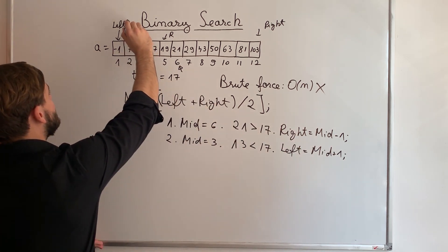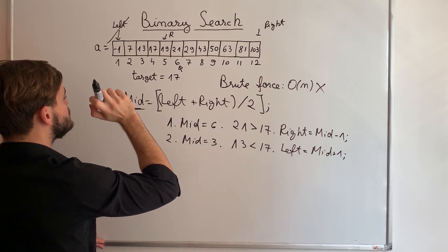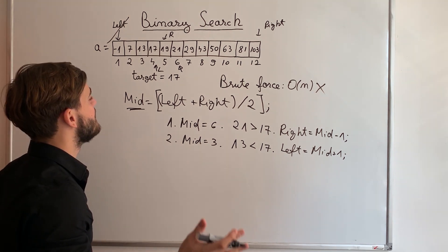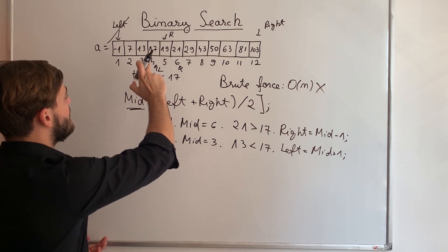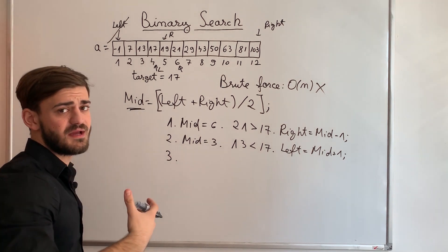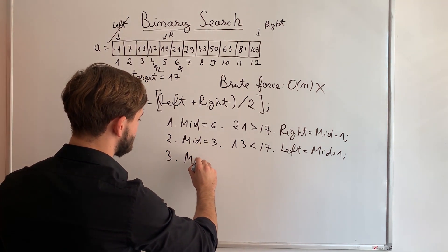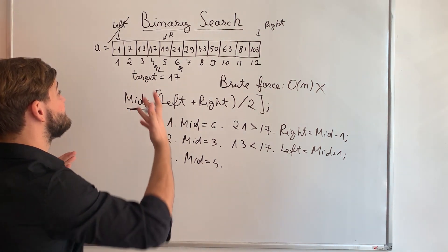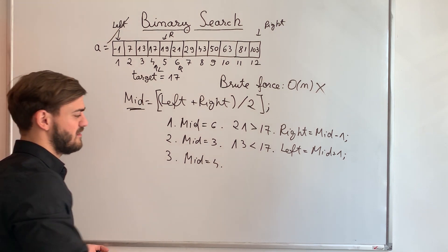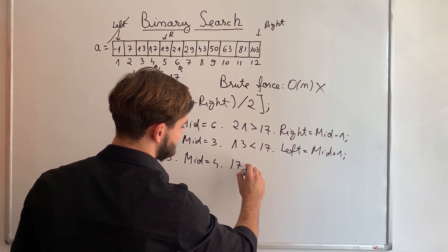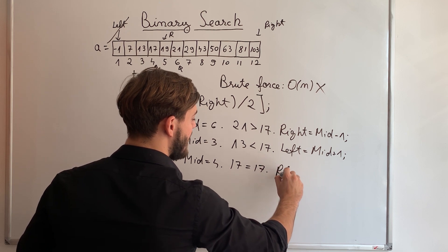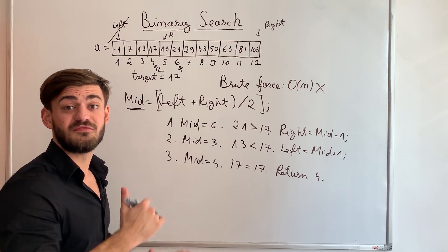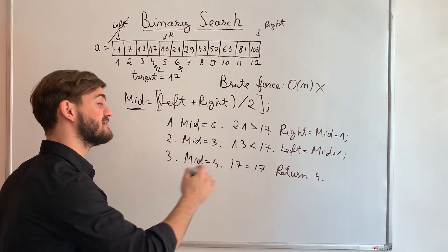I'm going to search on the right half, which means left becomes mid plus 1, so left is now at position 4. At step 3, the middle position is floor((4 + 5) / 2) = 4. The element at position 4 has value 17, which equals the target value. So we exit the algorithm and return position 4. After only three comparisons we found our desired position.